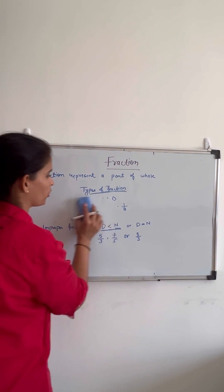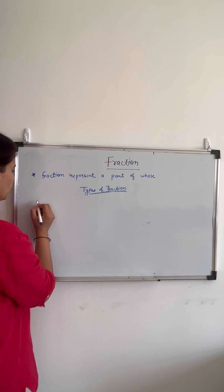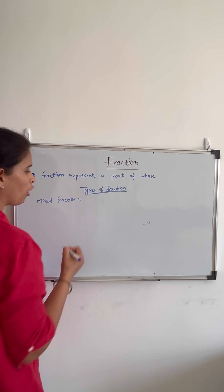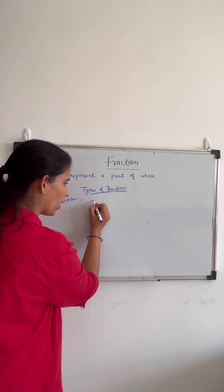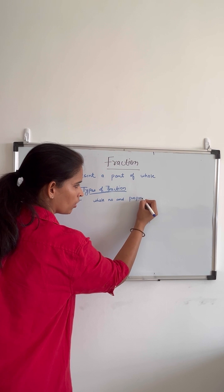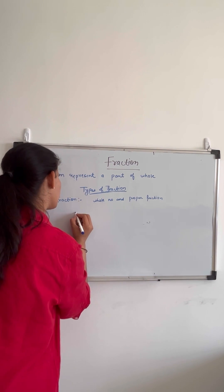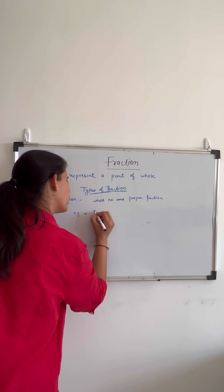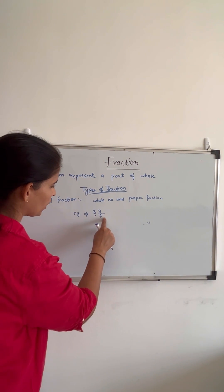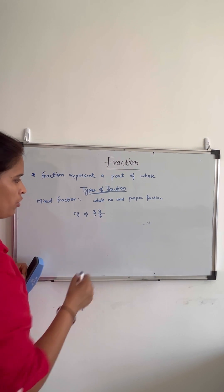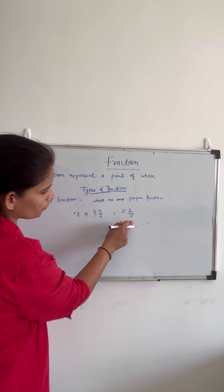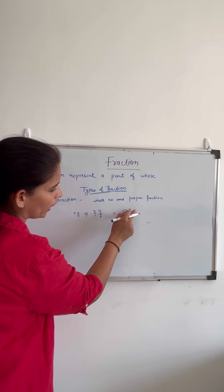The third type is called mixed fraction. A mixed fraction is a fraction that has one whole number and a proper fraction. For example, 3 and 3 by 7 — there is a whole number and one proper fraction, so this type of fraction is called a mixed fraction. Let's take one more example: 5 and 2 upon 5. This is also a mixed fraction because it consists of one whole number and one proper fraction.